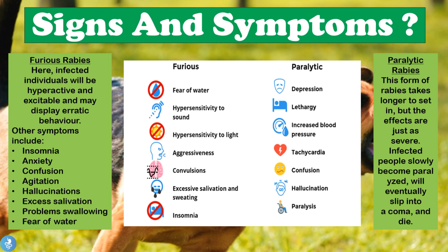There are two main types of rabies. In furious rabies, infected individuals are hyperactive and excitable and may display erratic behavior. Other symptoms include insomnia, anxiety, confusion, agitation, hallucinations, excessive salivation, problems swallowing, and a fear of water.